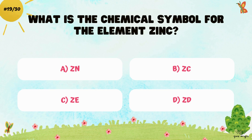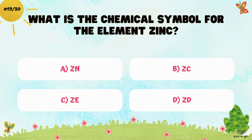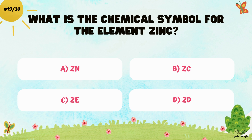What is the chemical symbol for the element Zinc? A. Zn, B. Zc, C. Ze, and D. Zd.